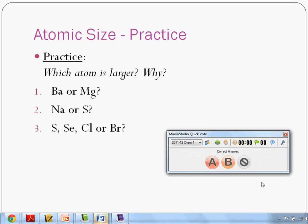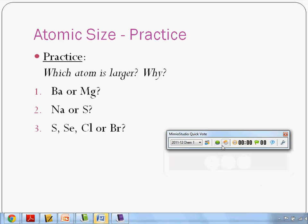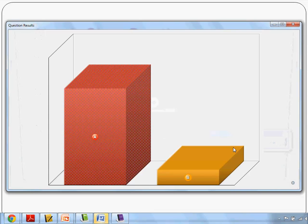Well, let's look at where they are on the periodic table. Barium, down here. Magnesium up here. Barium is going to be bigger using our trends here. Okay, let's see how we did.